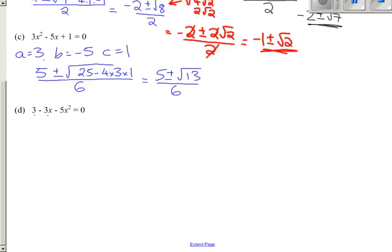Last one's written around the other way, so be careful here. a is minus 5, b is minus 3, and c is 3.